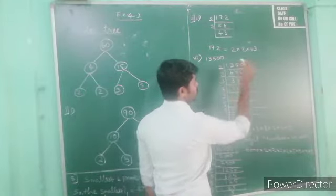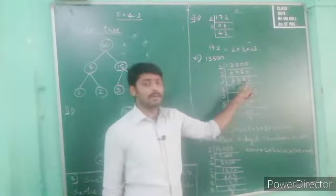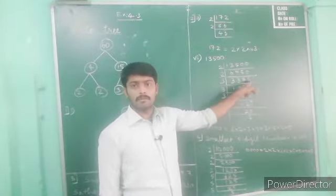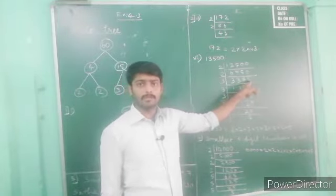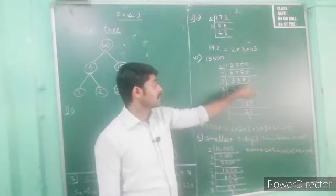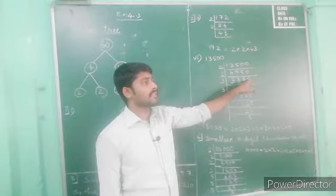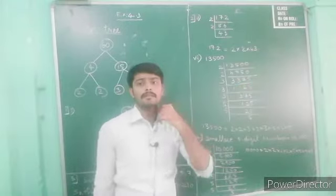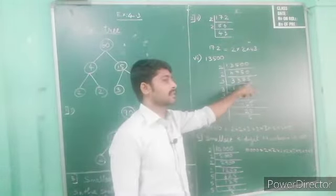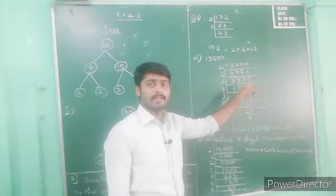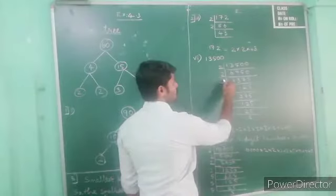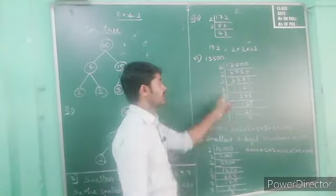After dividing by two, we got 3,375. This number will not divide by two because the number is not ending with an even number. So I am using three to divide. Three ones are three, three ones are three, two threes are six, one remaining fifteen, five threes are fifteen. We divide one by one like this.